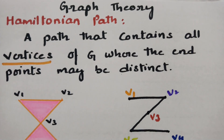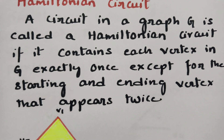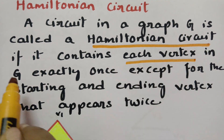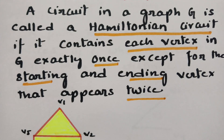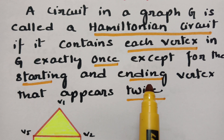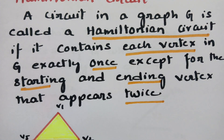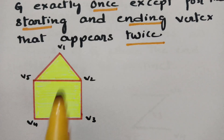Next, coming to Hamiltonian circuit. A circuit in a graph G is called a Hamiltonian circuit if it contains each vertex in G exactly once, except for the starting and ending vertices, which appear twice. Starting and ending vertices appear twice but the remaining vertices are all distinct. This means we have to start from one vertex, cross all the other vertices, and again reach the same starting vertex.